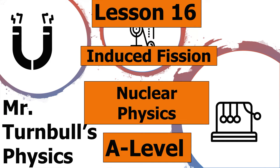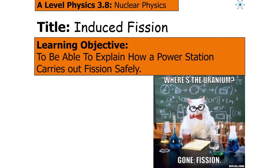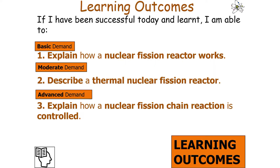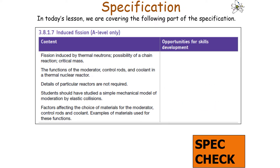Hello and welcome to this lesson on induced fission, which is part of the nuclear physics topic in AQA A-level physics. In today's lesson we're going to look at explaining how a power station carries out fission safely. We should be able to explain how a nuclear fission reactor works, describe a thermal nuclear fission reactor, and explain how a nuclear fission chain reaction is controlled, linking to AQA A-level physics specification 3.8.1.7 induced fission.